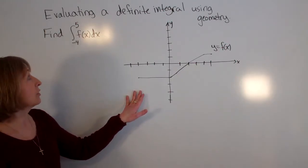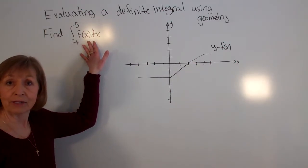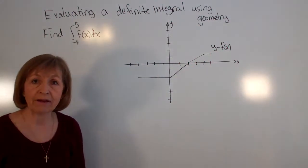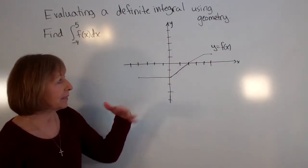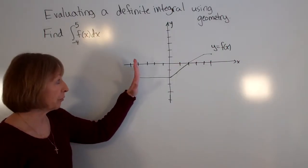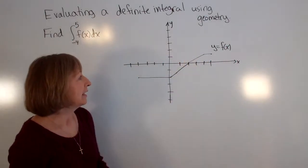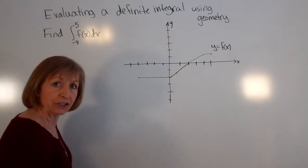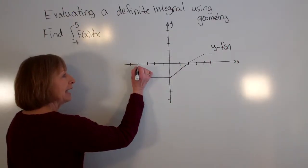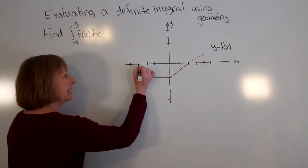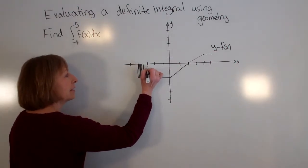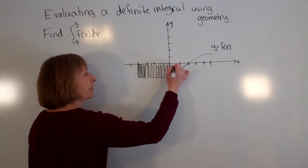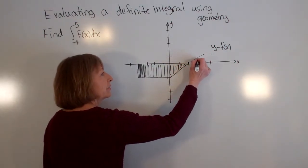So let's look at this particular question, which asks us to find the definite integral from negative 4 to 5 of f(x) dx, where this graph is the graph of our function. Notice it has line segments — it's a piecewise defined function over the domain from negative 4 to 5. The definite integral is looking at the output function values at each x as you go left to right, adding up all of those function values from the x-axis to the function.